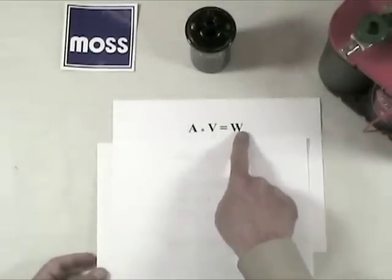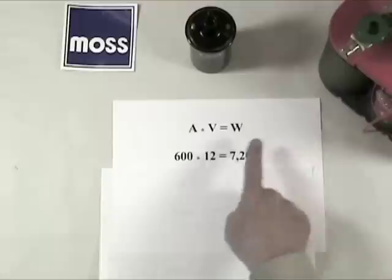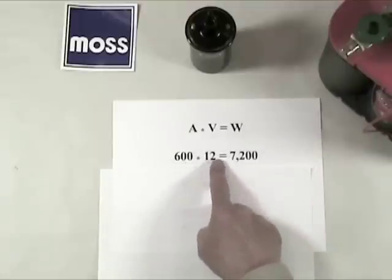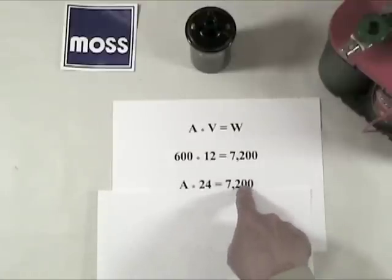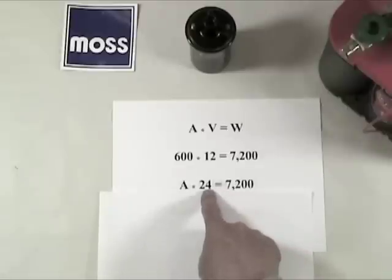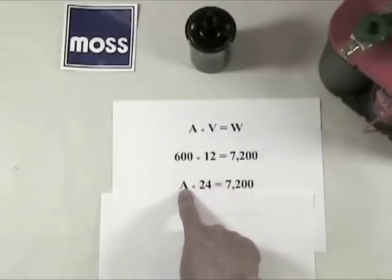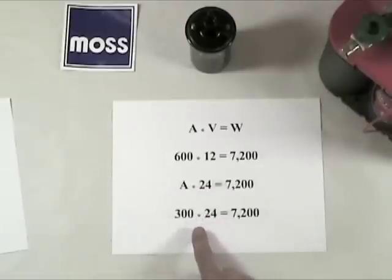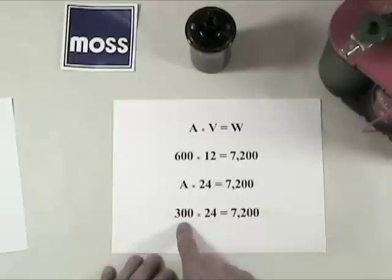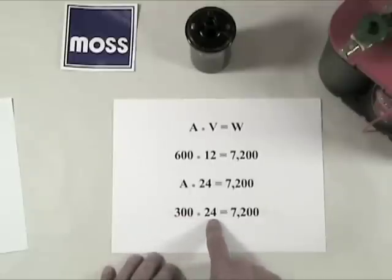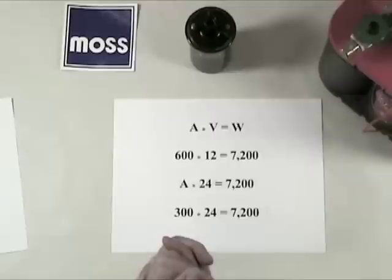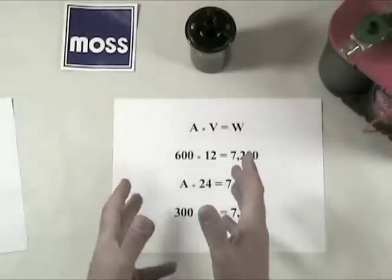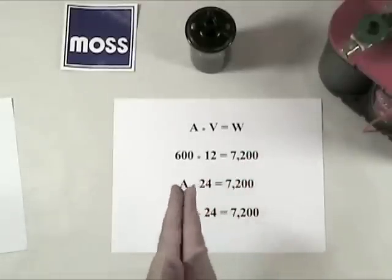Remember, amps times volts equals watts. The battery that sits right now is 600 amps times 12 volts, there's my 7,200 watts. I have to keep the 7,200 because it's the same battery, but I want 24 volts out of it, which means the amperage has to change. The formula comes out to say 300 amps times 24 volts equals 7,200. So I can get this out of this battery, but a person might ask, can we really change voltage like that? And the answer is yes, we can.